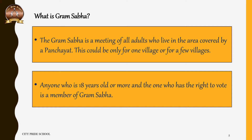What is Gram Sabha? The word itself tells us: Gram means village and Sabha means assembly or a meeting of the people. So Gram Sabha is a meeting of all the adults who live in the area covered by a Panchayat. This could be only for one village or for a few villages. Anyone who is 18 years old or more and has the right to vote is a member of Gram Sabha.